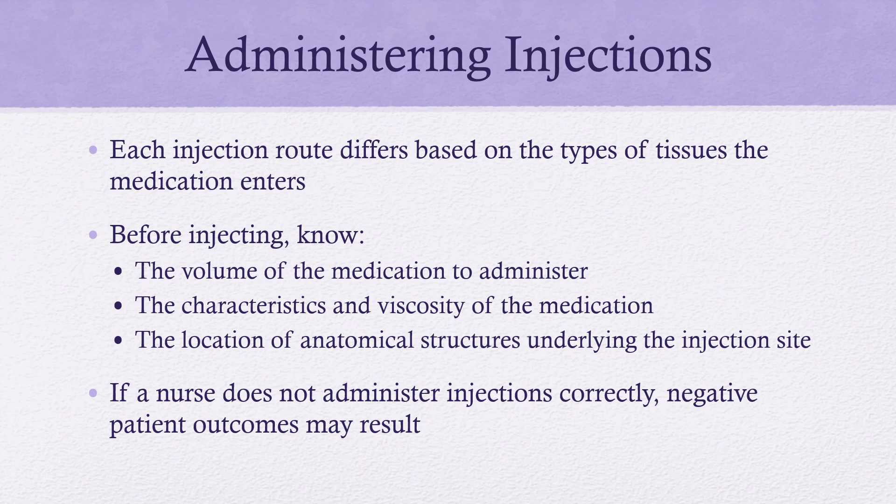Here are some basic rules of thumb to keep patients safe. Each injection route differs based on the type of tissue the medication is entering. Before you inject, make sure you aren't giving too much in one location, know the viscosity of your medication, and confirm it's the appropriate route — if there's a better route, advocate for your patient. Always make sure you know your landmarks; you don't want to accidentally give an injection into the bone.